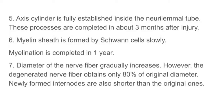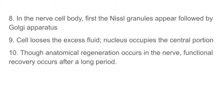However, the regenerated nerve fibers obtain only 80% of the original diameter. Newly formed internodes are also shorter than the original ones. In the nerve cell body, first the Nissl granules reappear, followed by the Golgi apparatus. The cell loses the excess fluid and the nucleus returns to the central portion. Though anatomical regeneration occurs in the nerve, functional recovery occurs after a long period.